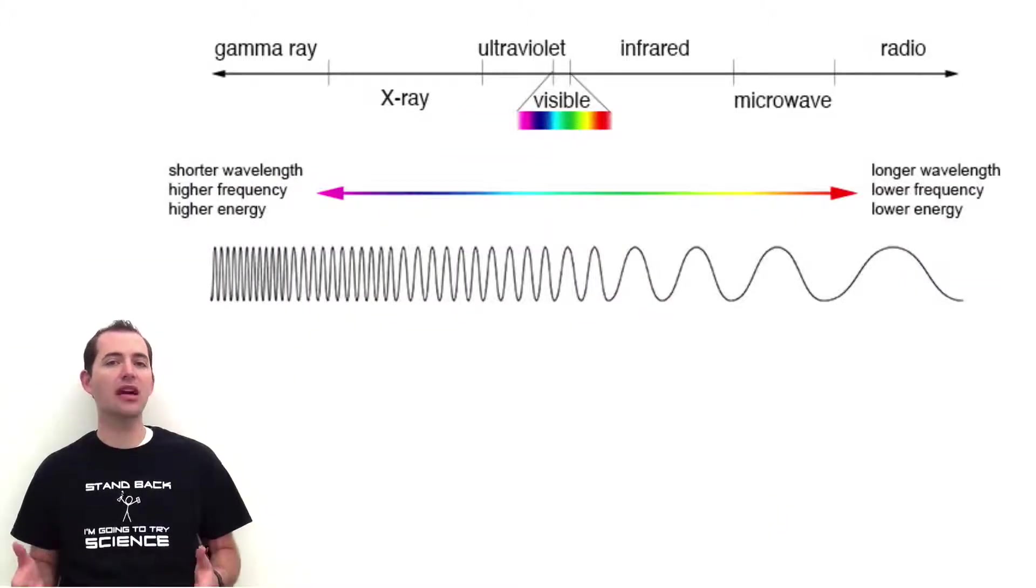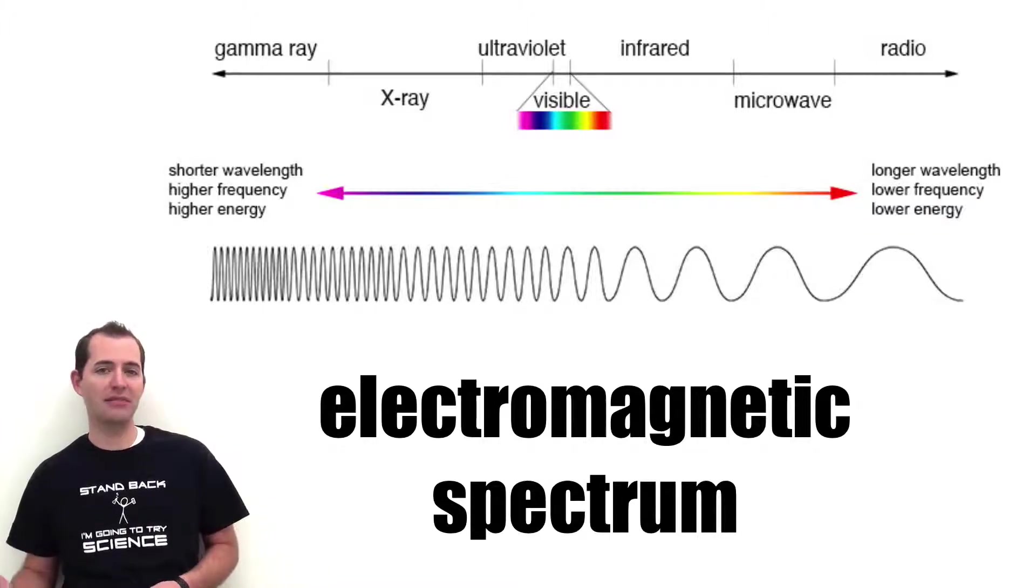Electromagnetic waves have a very large range of frequencies and wavelengths, and these are known collectively as the EM or the electromagnetic spectrum.